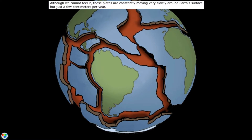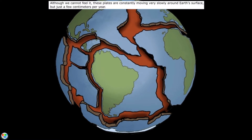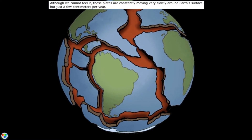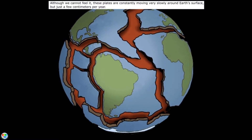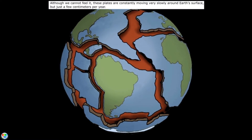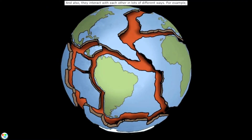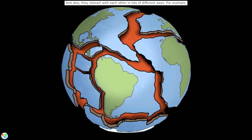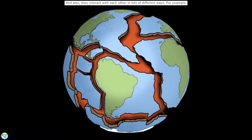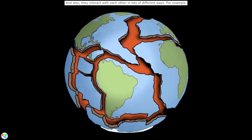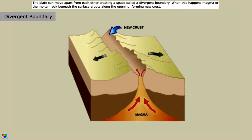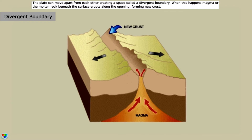Although we cannot feel it, these plates are constantly moving very slowly around earth's surface, but just a few centimeters per year. And also they interact with each other in lots of different ways. For example, the plates can move apart from each other creating a space called a divergent boundary.